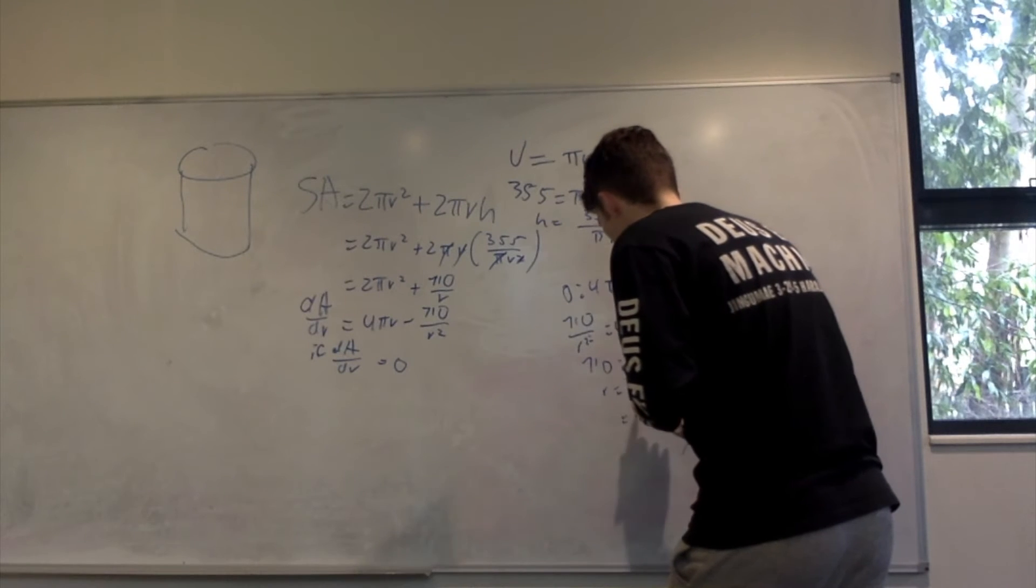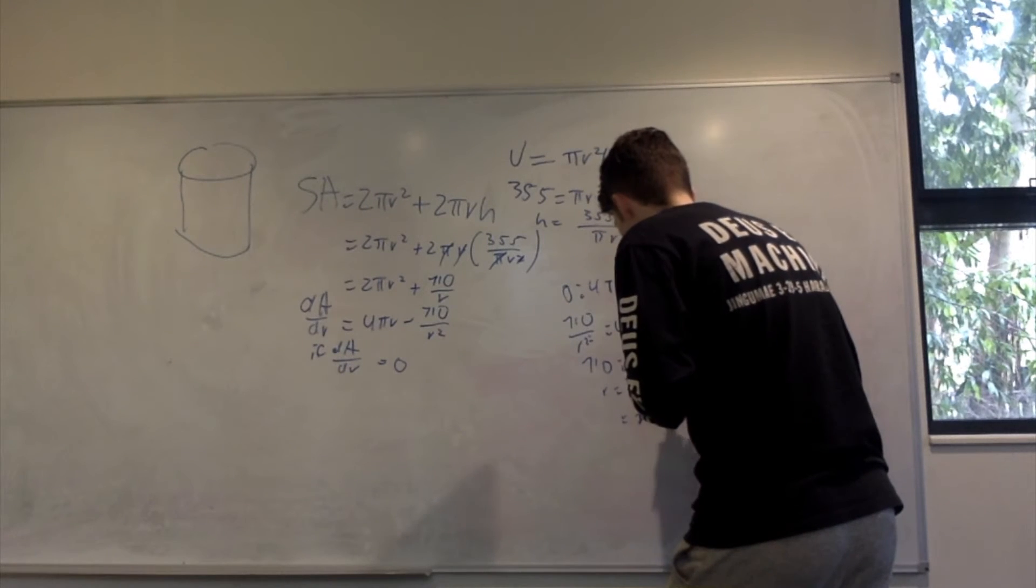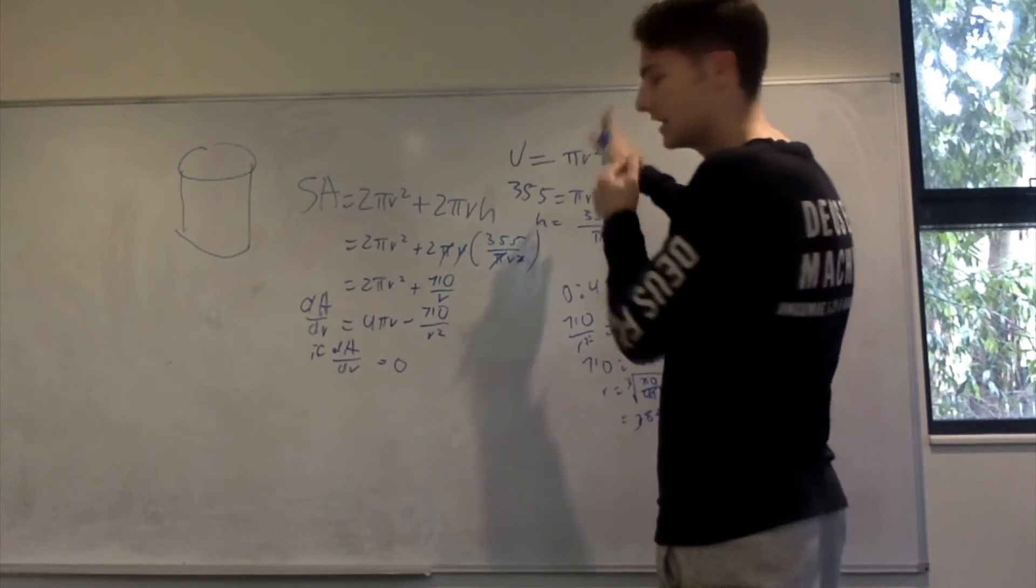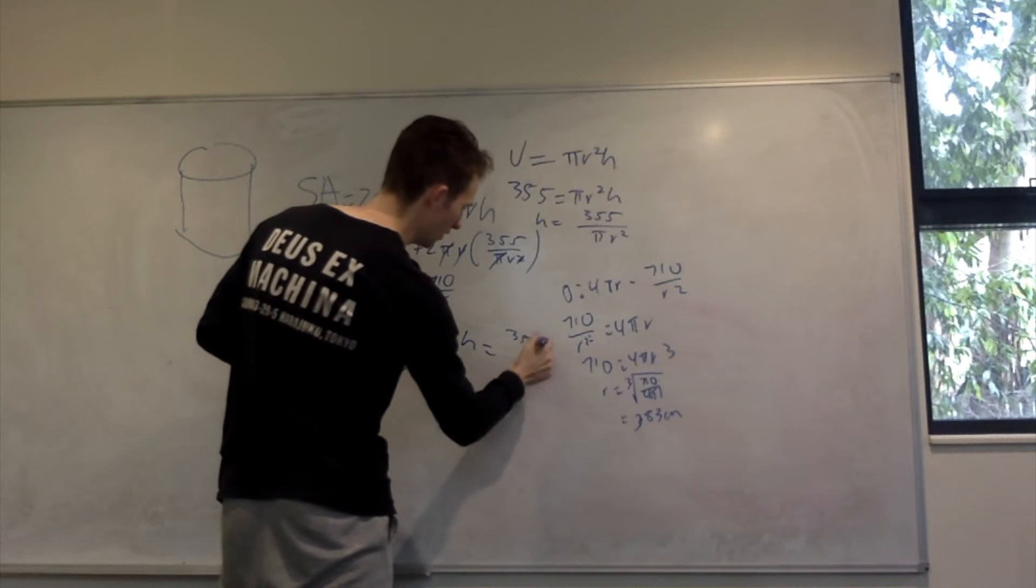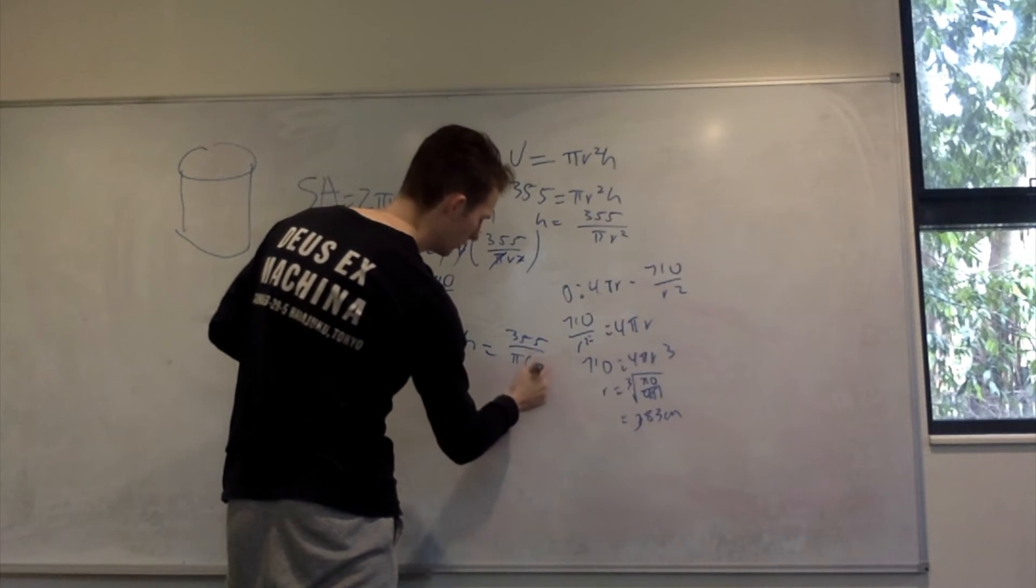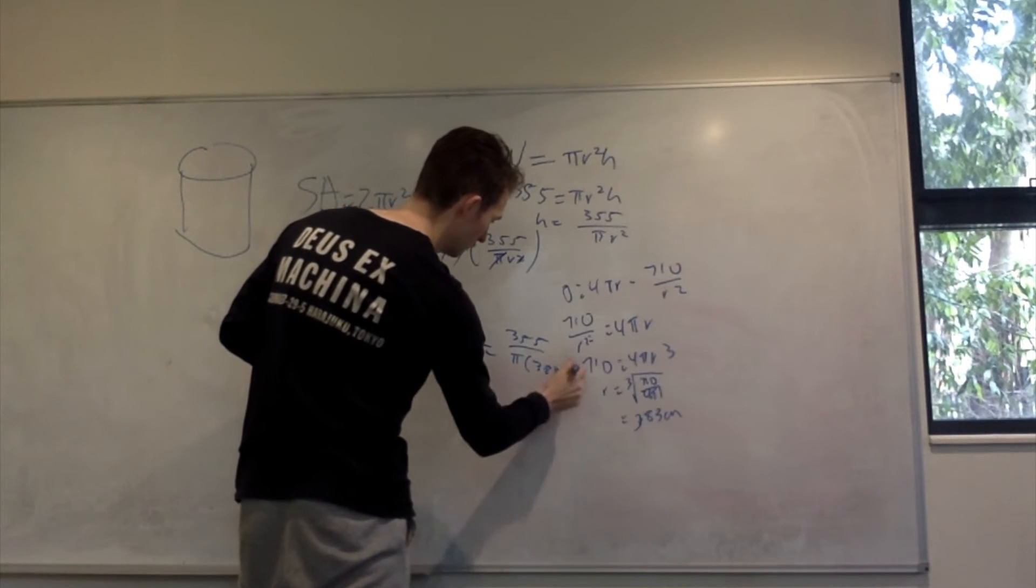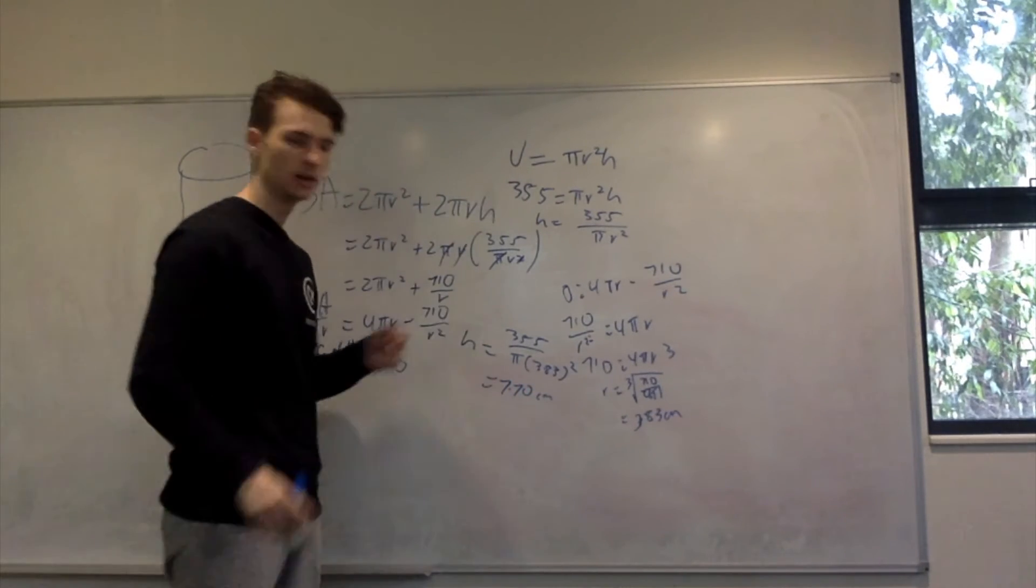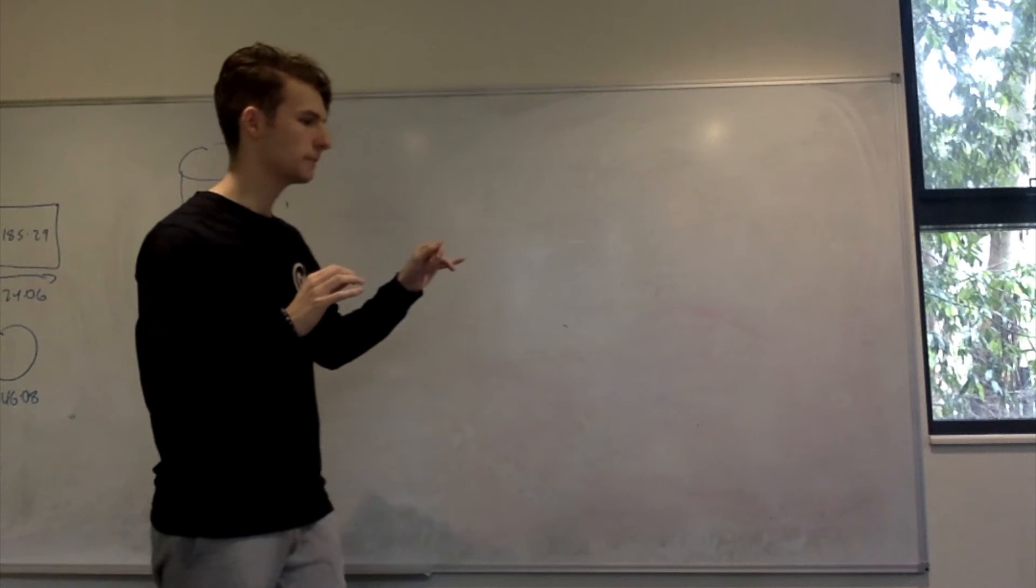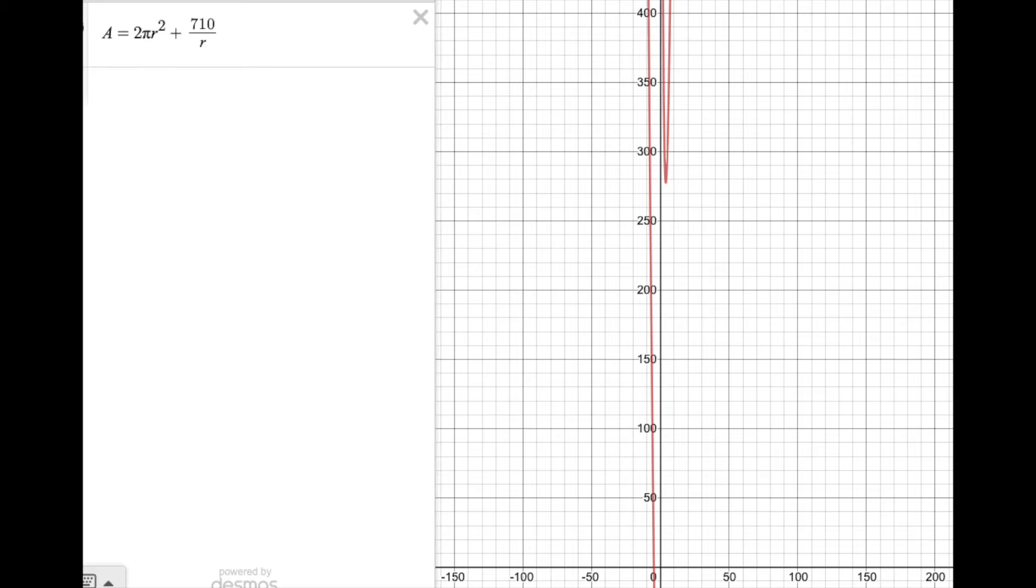That comes out to about 3.83 centimetres. Then we can find h as well. h = 355/(π × 3.83²). And that comes out to about 7.70 centimetres. Just before we move on, I'd like to talk about what we just did there. We were finding the minimum. We can confirm this by looking at the graph, which we'll see here now.